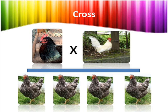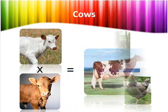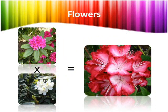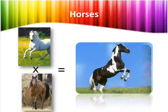Therefore, in a co-dominance pattern of inheritance, the heterozygous offspring does not show the dominant phenotype, but shows both phenotypes of the parents equally. Other examples that follow this pattern of inheritance can be chickens, cows, flowers, horses, and more.